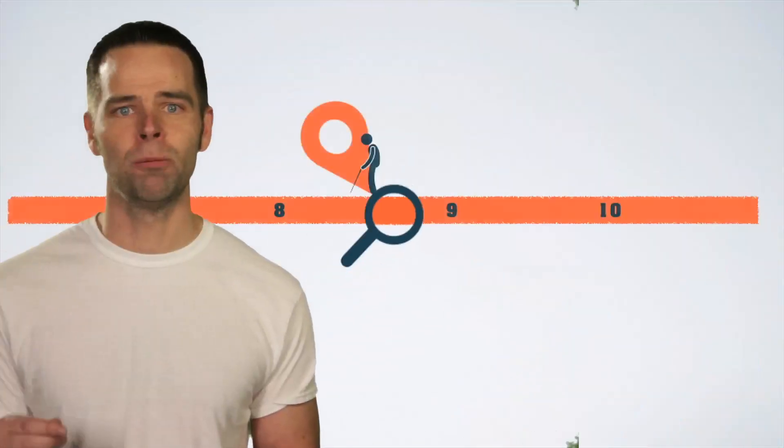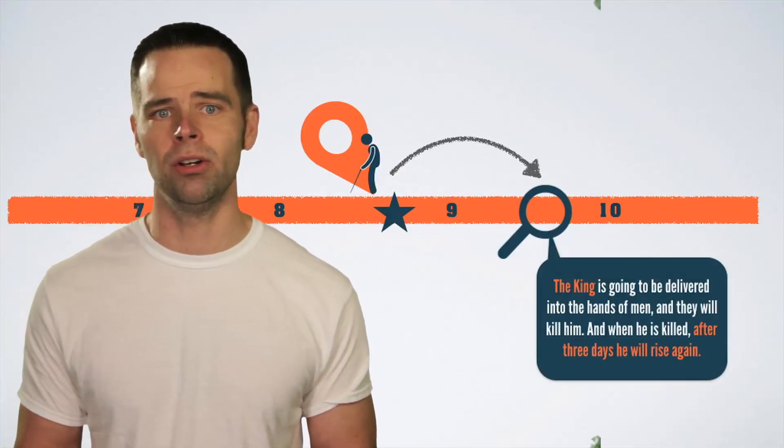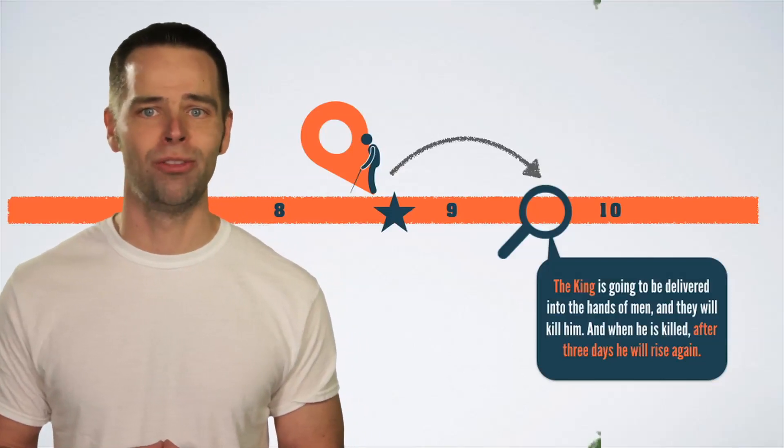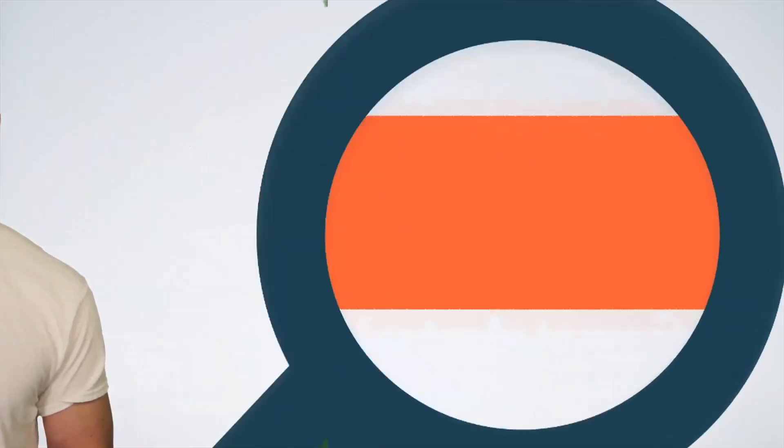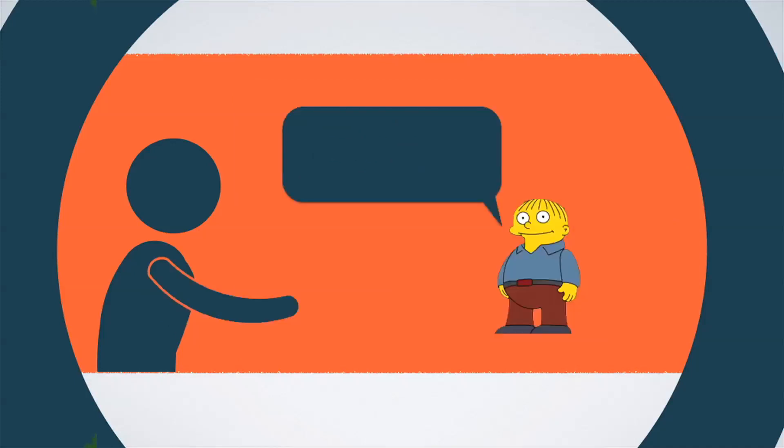We find this sort of blind pride again in a chapter later. When Jesus tells the disciples again that he's going to be killed, they immediately start arguing with one another about which one of them is the greatest. And still, it persists a chapter after that. This time, to make sure they don't miss the point, Jesus not only tells them that he's going to be killed, but mocked, spit upon, and whipped too. To which James and John respond by asking if they can have the seats closest to his throne.